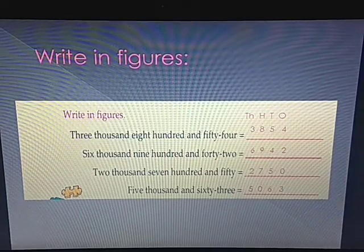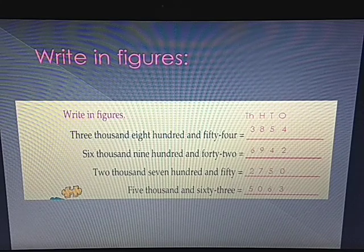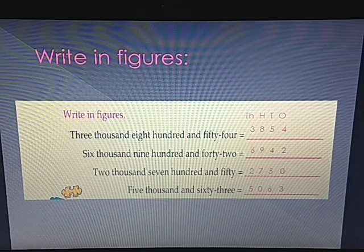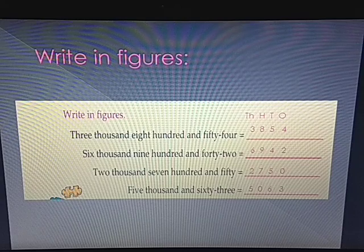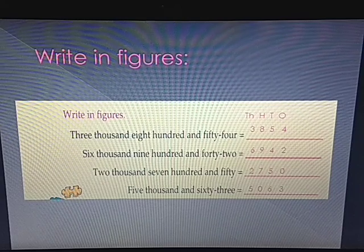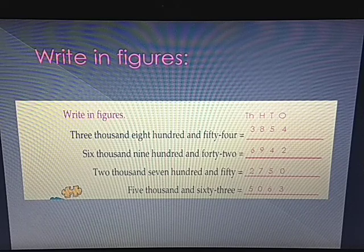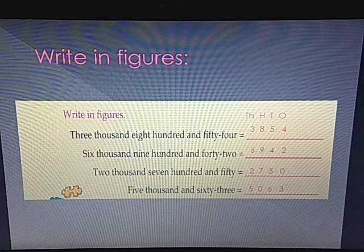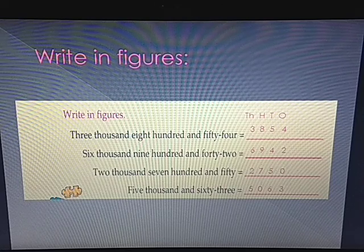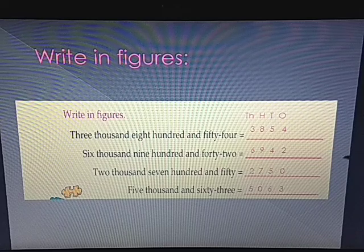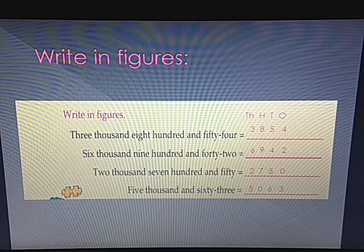We have come to the end of the video class. Here we have learned block representation of four-digit numbers, writing in figures, and writing in numbers. So children, today you will write in your classwork copy from one thousand to one thousand one hundred, and do these two pages in your junior maths book. We will continue in the next video class. Thank you, Namaste, bye.